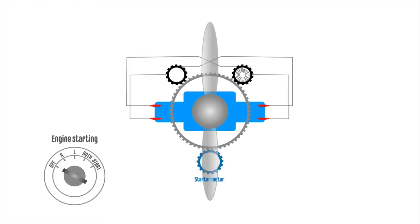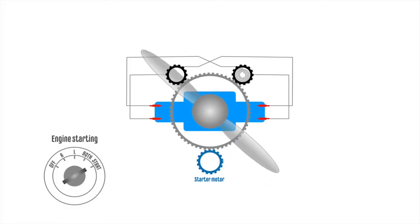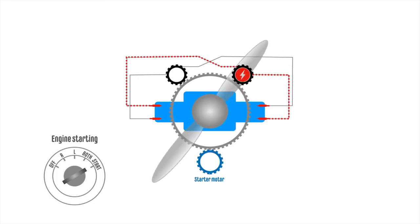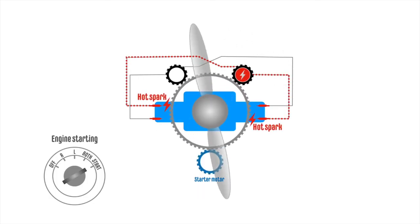When the engine starts, a certain amount of potential energy is stored by the coiled spring. When the coil releases, it accelerates the magneto rapidly to generate sufficient current to create a hot spark.